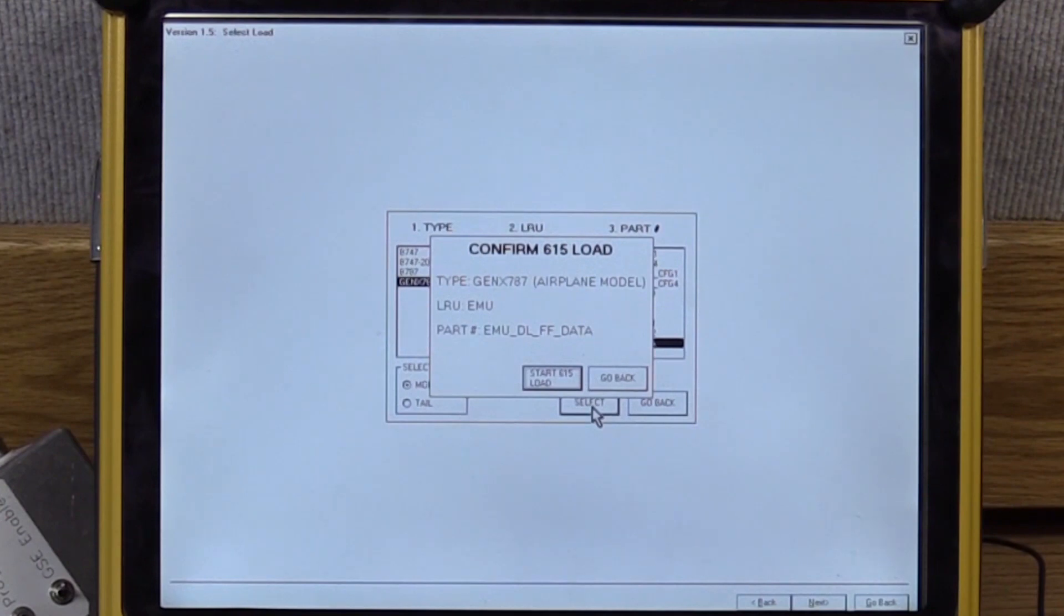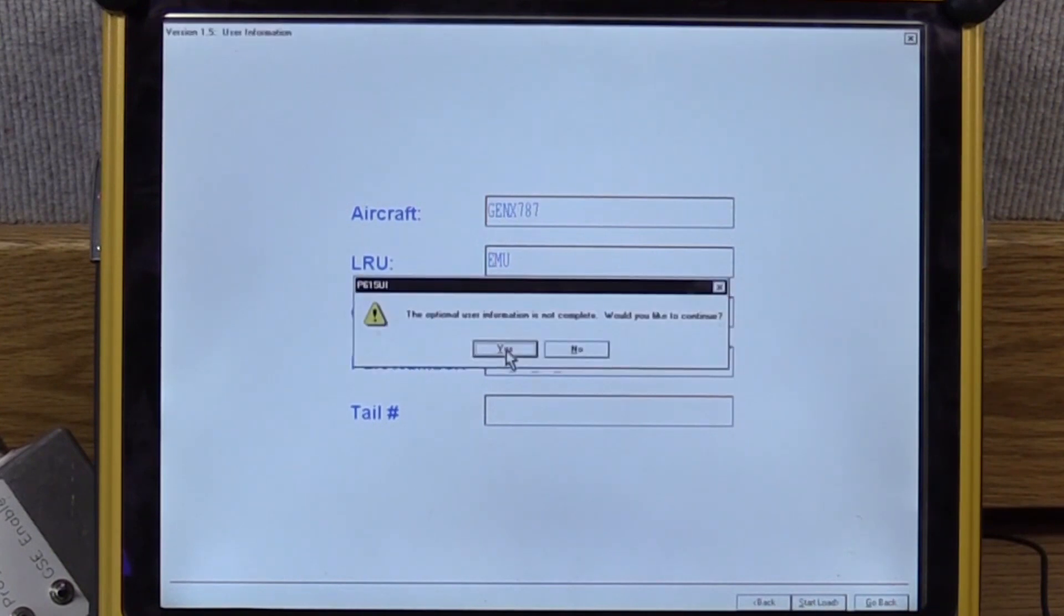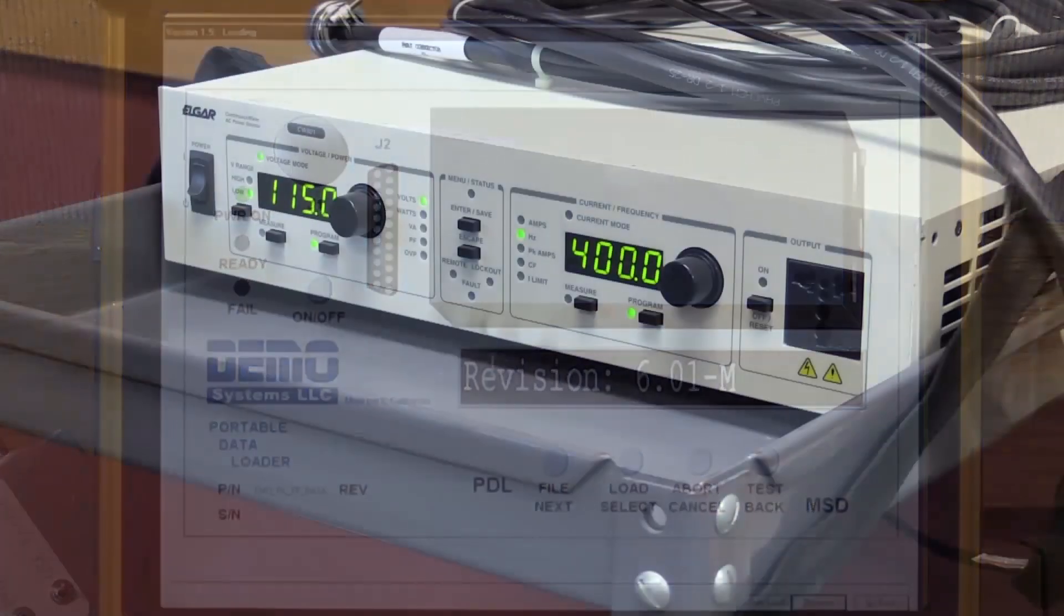You'll get the confirmed 615 load pop-up. You'll see all the data you selected is showing. Then you press the start 615 load button. From here you just go to the bottom right and select start load. It gives you an option to enter additional data but this is not necessary so you can just select yes to continue. From there you turn on the power supply.